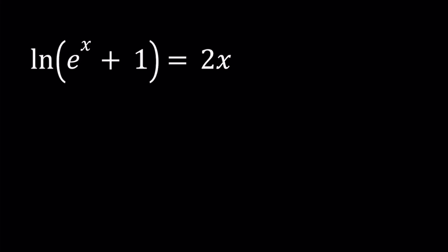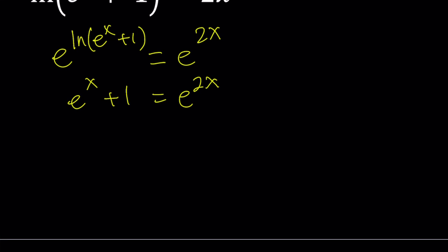Let's go ahead and either use the definition of logarithms or you can do e to the power both sides. e^(ln(e^x + 1)) = e^(2x). Now the rule says e^(ln something) equals something, so this becomes e^x + 1 and the right hand side is e^(2x). So we get a nice equation.